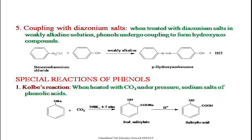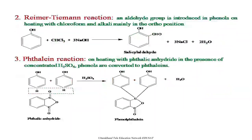Next comes the special reactions of phenols. The first is the Kolbe reaction. When sodium phenoxide is reacted with carbon dioxide at high temperature and pressure (about 4 to 7 atmospheres), we obtain sodium salicylate. This sodium salicylate on hydrolysis with a weak acid like dilute HCl or dilute sulfuric acid gives salicylic acid, which is the starting compound for the preparation of aspirin.